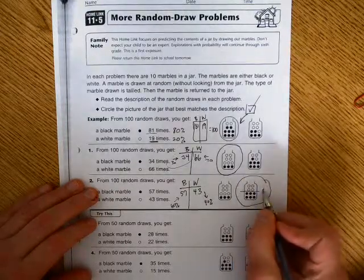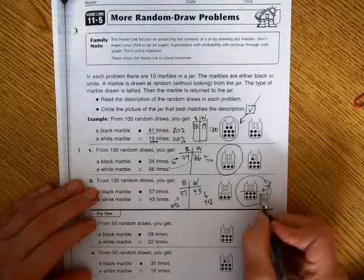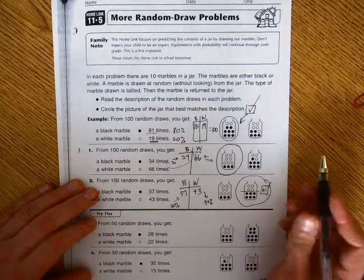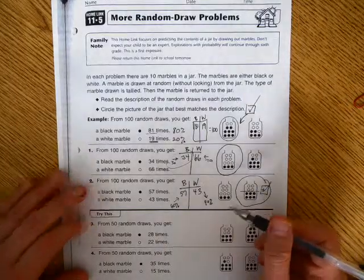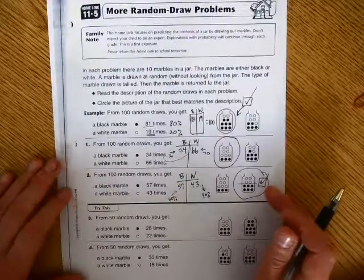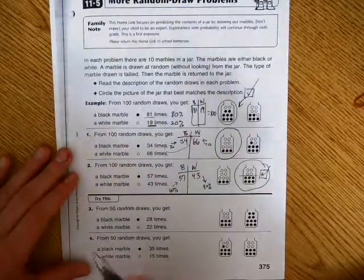since 4 of the marbles out of 10 are white, I would pull a white marble out about 40% of the time. You see, it's not perfect, it's a random draw, so it's a chance, but it's how probable it is.